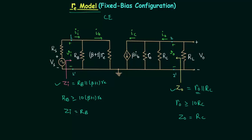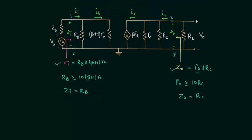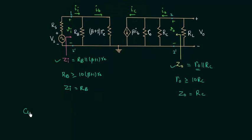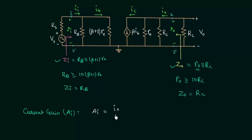Now we will find out the current gain. Current gain is represented by the subscript i, and it is defined as the ratio of output current to input current. So Ai equals output current divided by input current.